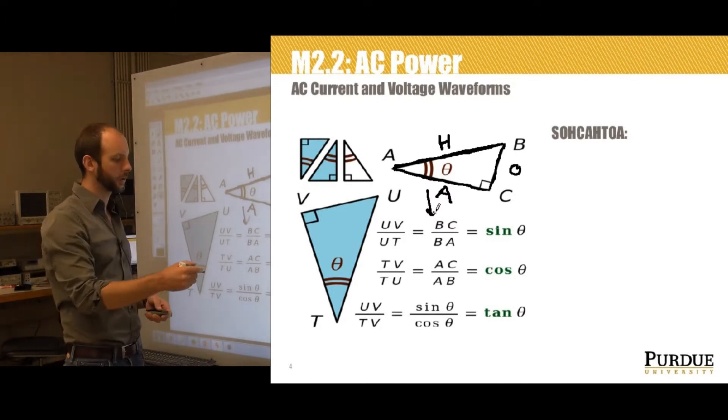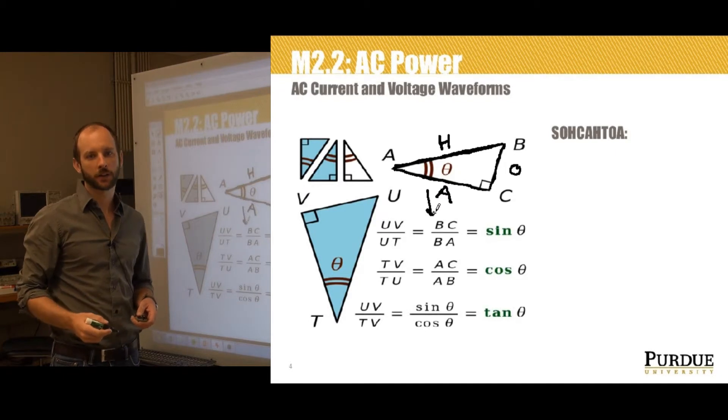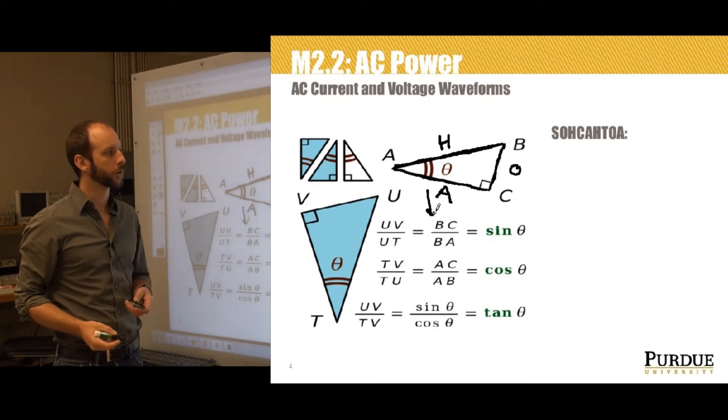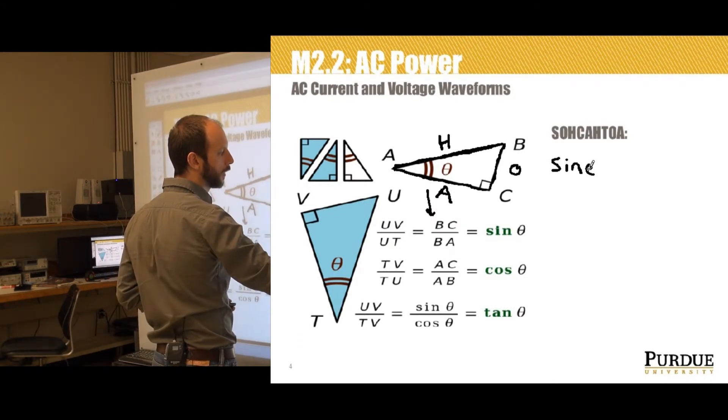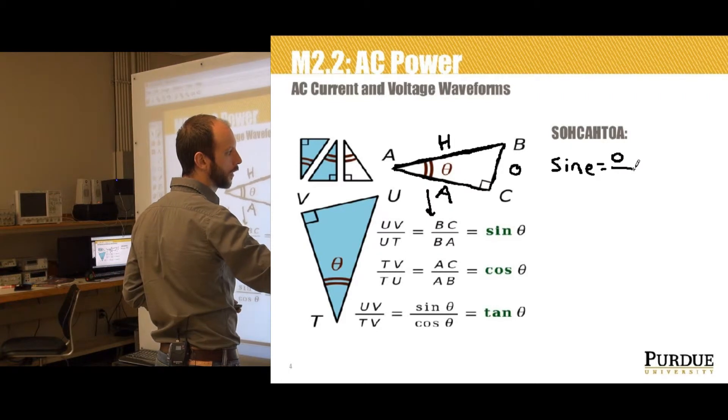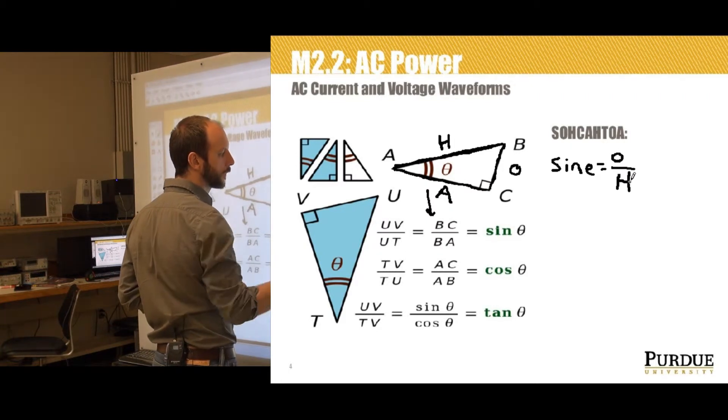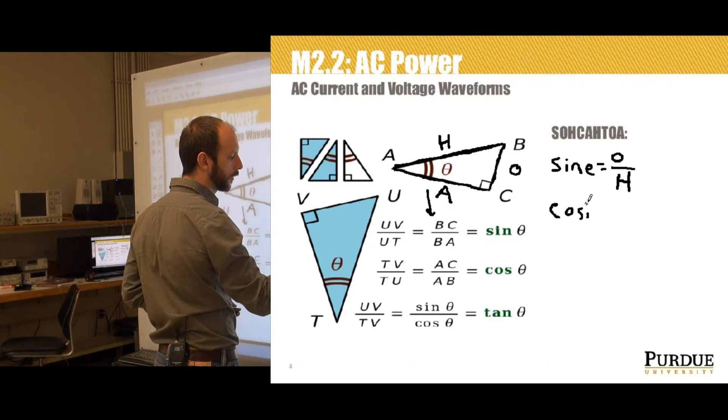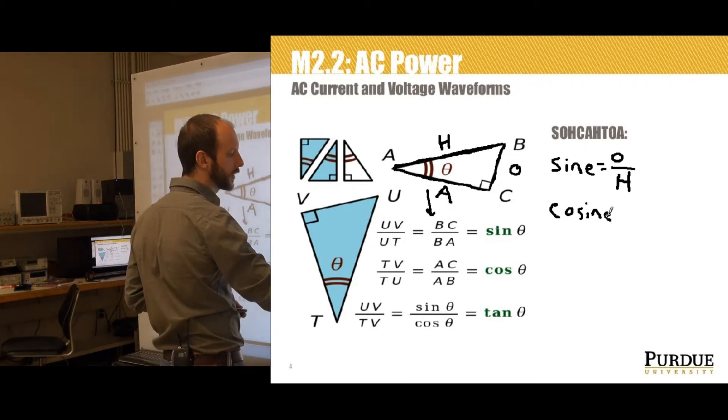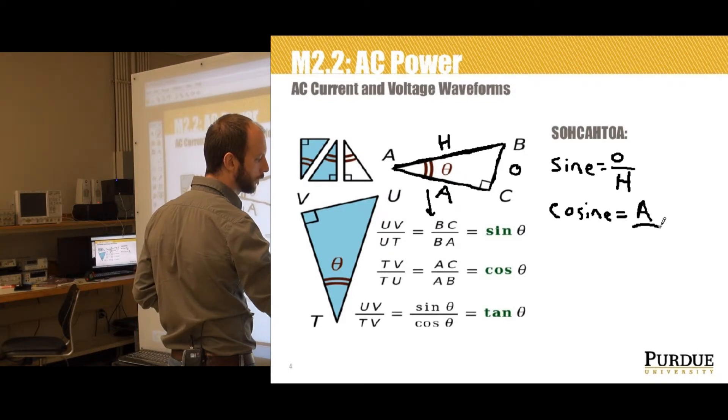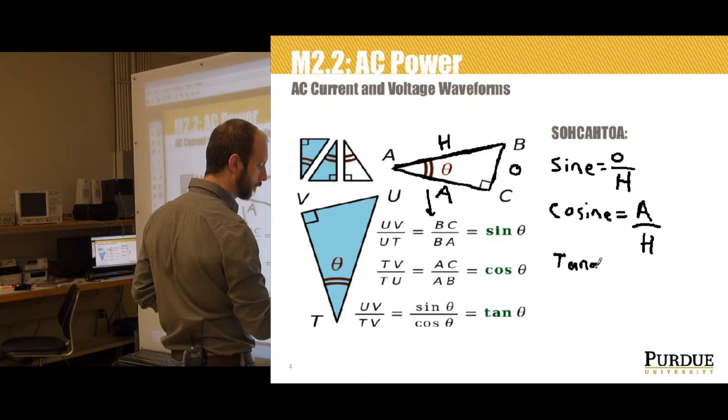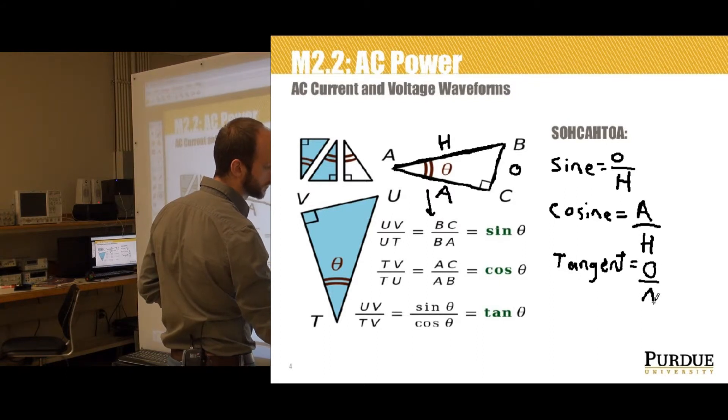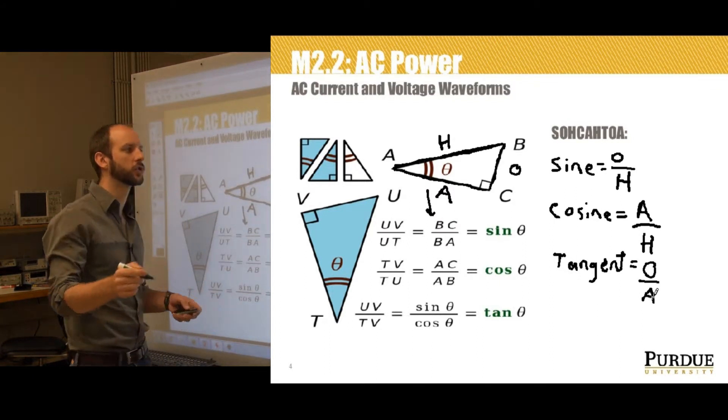Often these definitions for sine, cosine, and tangent are remembered using a mnemonic device I always pronounce SOHCAHTOA, where sine equals opposite over hypotenuse, cosine equals adjacent over hypotenuse, and tangent equals opposite over adjacent, so you get SOHCAHTOA, S-O-H-C-A-H-T-O-A.